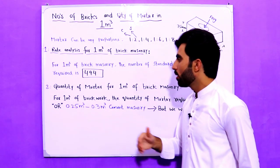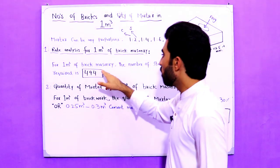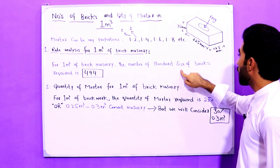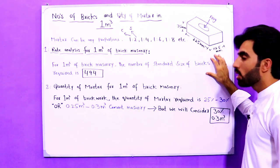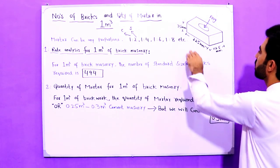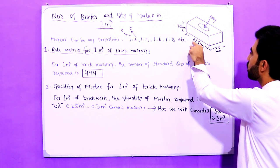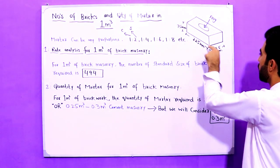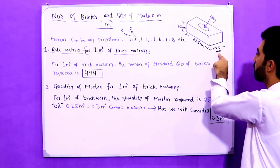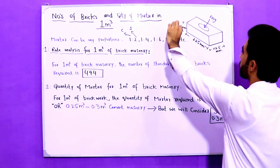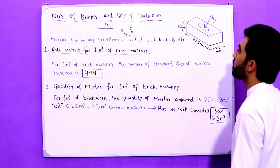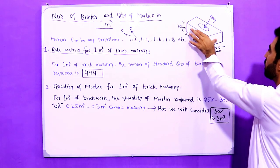Now come to rate analysis for 1 meter cube of brick masonry. First I will tell you the standard size of the brick. The length of the brick is 225 millimeters, its width is 112.5 millimeters, and its depth or thickness is 75 millimeters, as you can see in this diagram.